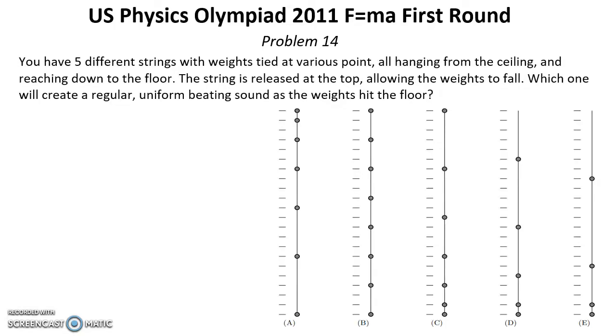Problem fourteen. Solution for this problem you can find below this video on the reference in the description. You have five different strings with weights tied at various points, all hanging from the ceiling and reaching down to the floor. The string is released at the top allowing the weights to fall. Which one will create a regular uniform beating sound as the weights hit the floor?